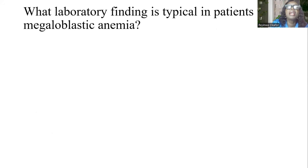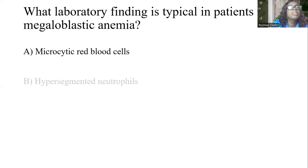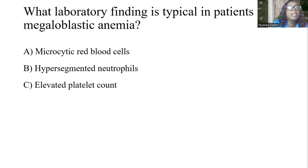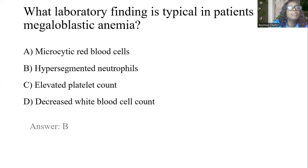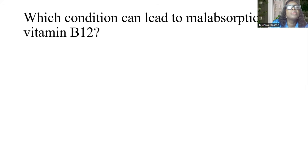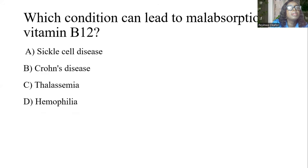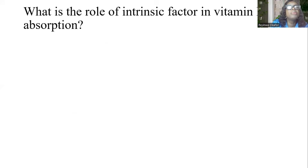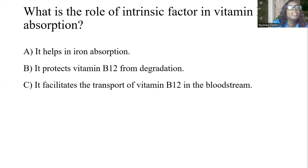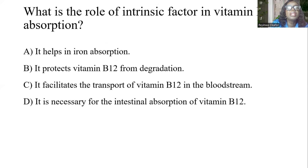What laboratory finding is typical in patients with megaloblastic anemia? A, microsize red blood cells. B, hypersegmented neutrophils. C, elevated platelet count. D, decreased white blood cell count. And the answer is B, hypersegmented neutrophils. Which condition can lead to malabsorption of vitamin B12? A, sickle cell disease. B, Crohn's disease. C, thalassemia. D, hemophilia. And the answer is B, Crohn's disease. What is the role of intrinsic factor? It is necessary for the intestinal absorption of vitamin B12. The answer is D.